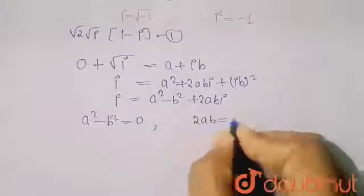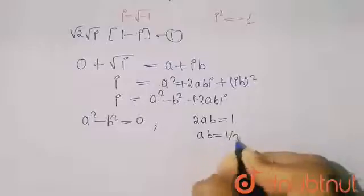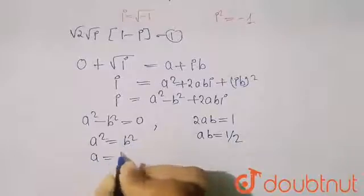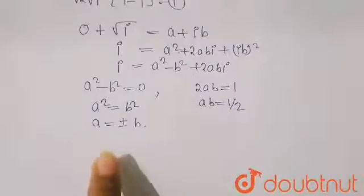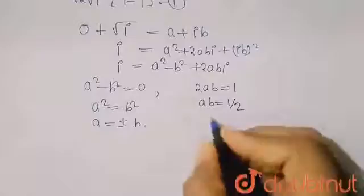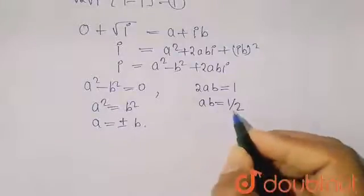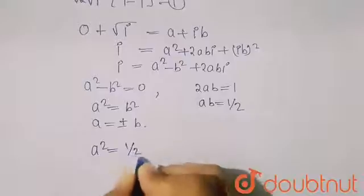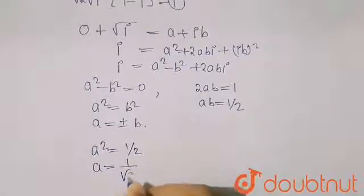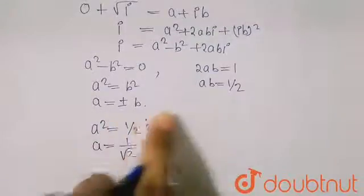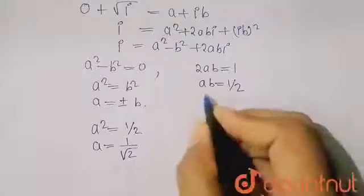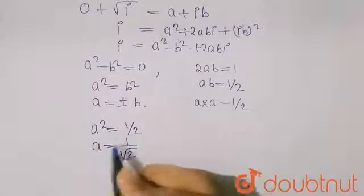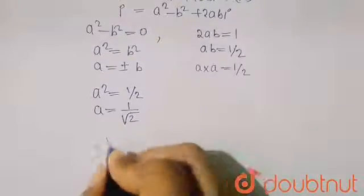From the imaginary part: 2ab = 1, so ab = 1/2, which is positive. From a² = b², we get a = ±b. Since ab > 0, a and b have the same sign. Substituting a = b into a·b = 1/2 gives a² = 1/2, so a = 1/√2.